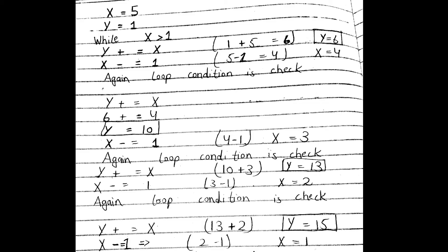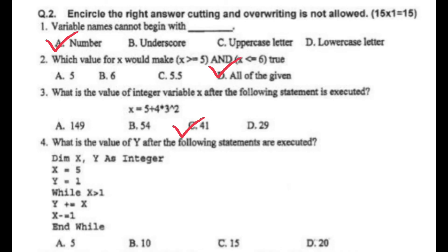Now when the loop checks again, x value is 1. The condition 1 > 1 is false, so the loop ends here. The final value of y is 15, so the correct answer is 15.